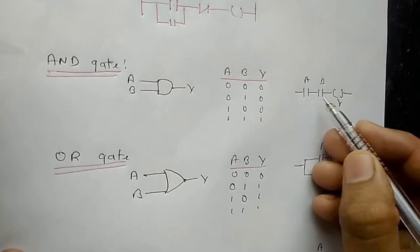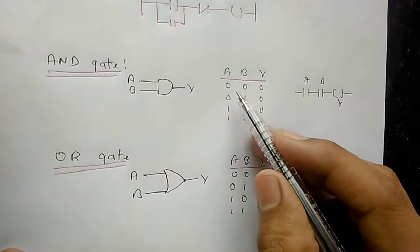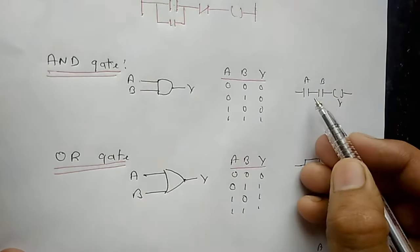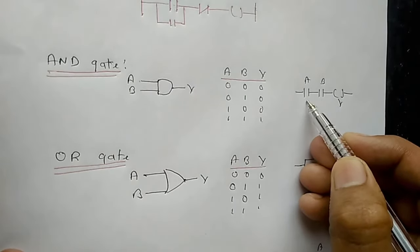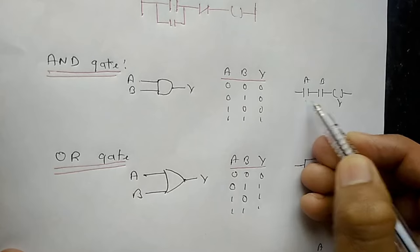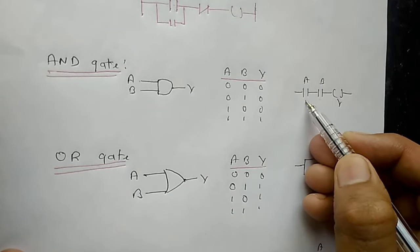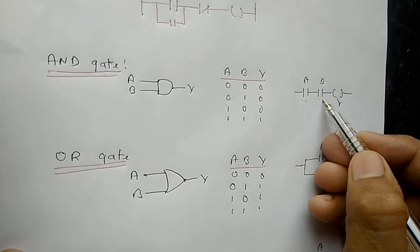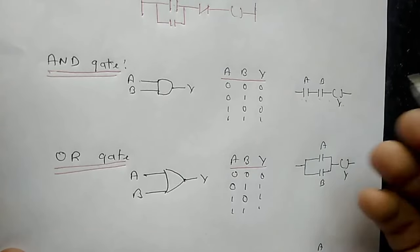The inputs are A and B, and the output is Y. If A is false and B is false — that is, if there is no power supply on both A and B — then the output will be false.